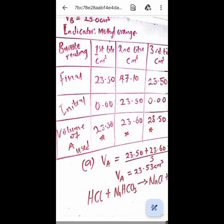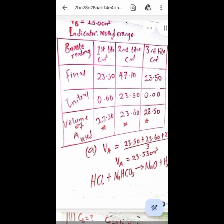But one thing is before you draw your table like this, you just have to write the volume of pipette used, which is 25 and the type of indicator used. Then we now have the three tables.